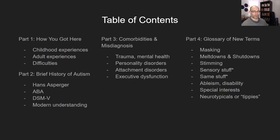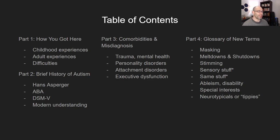Here is a table of contents so you know what to expect. If you want to jump around, feel free. Part one covers how you got here — some childhood experiences you may have had, and some adult experiences and difficulties you might be facing. Part two is a brief history of autism from the early 20th century up to today. Part three is comorbidities and misdiagnosis — things you might have been misdiagnosed with that could actually just be autism, or it can be multiple things. Part four is a glossary of new terms like masking and stimming. And part five, which is very short, is next steps.